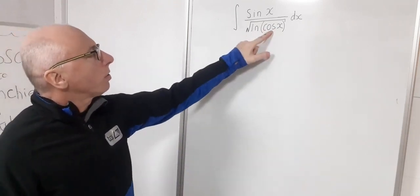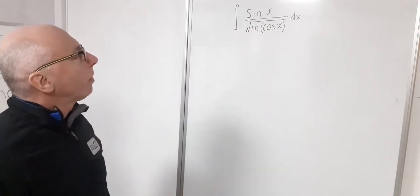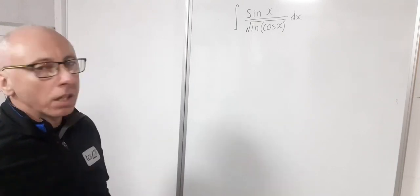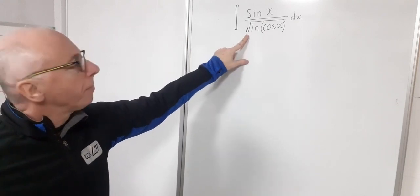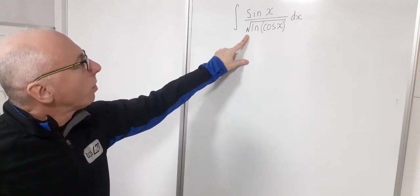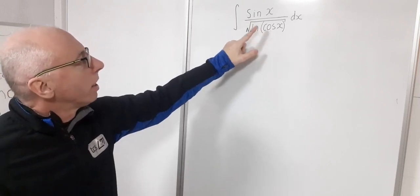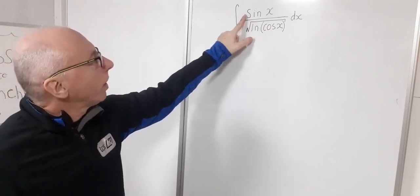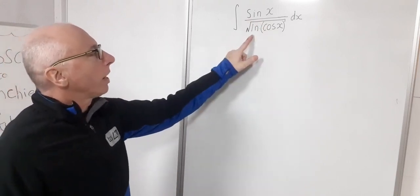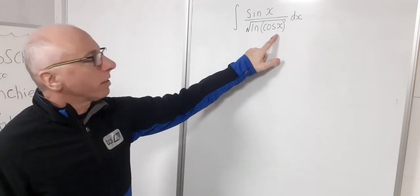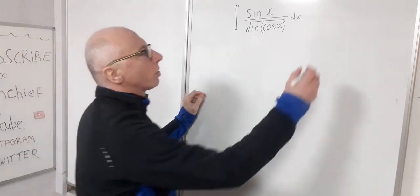We've got sine, cosine, square root, and natural log. We could try integration by parts, but with this square root term that doesn't look attractive, so u-substitution is the way forward. With sine and cosine present, we need a substitution to eliminate one of them. I'm going to choose u equals the natural log of cosine of x.